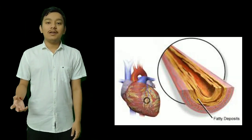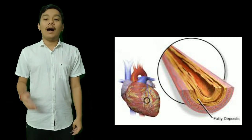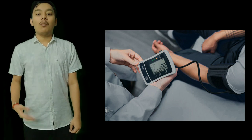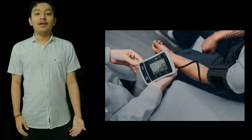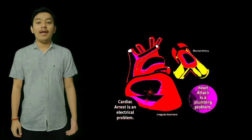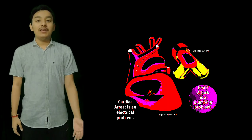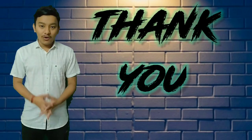Coronary artery disease involves damage or disease in the heart's major blood vessels. High blood pressure, also known as hypertension, is a condition in which the force of blood against the artery wall is too high. Cardiac arrest is a condition in which sudden, unexpected loss of the heart's function, breathing, and consciousness occurs. In this video we discussed the anatomy of the heart, functions of the heart, and some heart diseases. Thanks for watching.